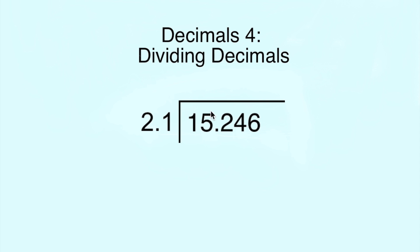In order to do this, you draw out your simple division box. What we really want to do is move this decimal one place, as you can see here. But what you do to that outside number, you must also do to the inside number.